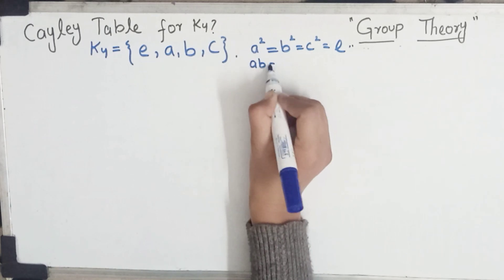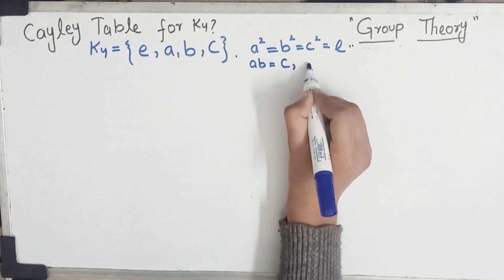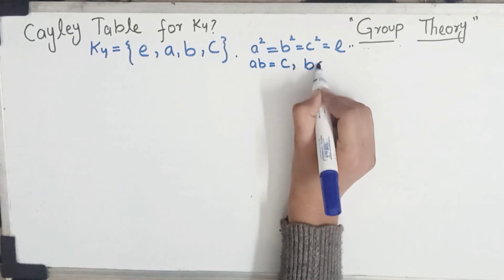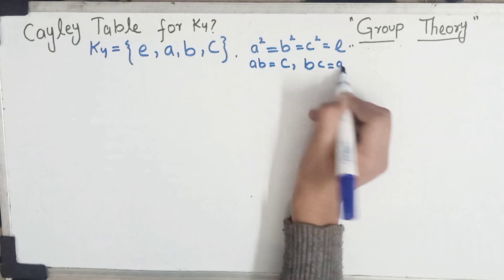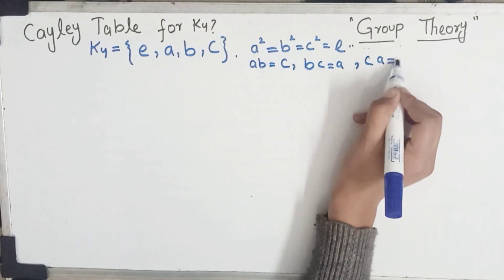The multiplication relations are: a·b = c, b·c = a, and c·a = b.